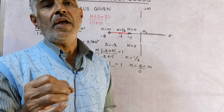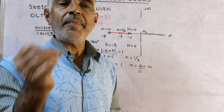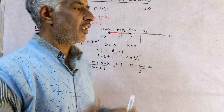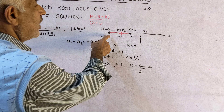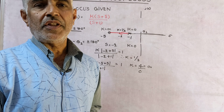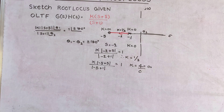Next, take s equal to minus 2. Then k times mod(minus 2 plus 5) divided by mod(minus 2 plus 1) equals 1. That gives k times 3 divided by mod(minus 1) equals 1, so k times 3 divided by 1 equals 1, therefore k equals 1 by 3. At s equal to minus 2, the value of k is 1/3, showing k increases from 0.